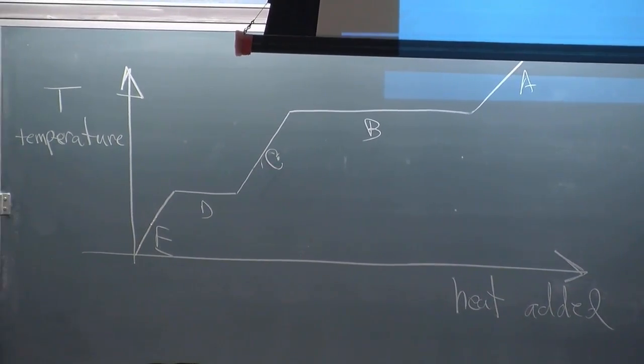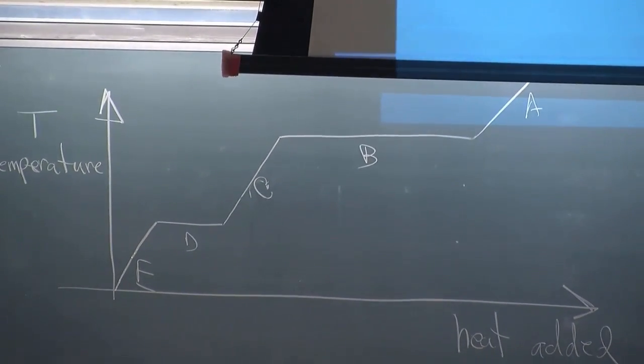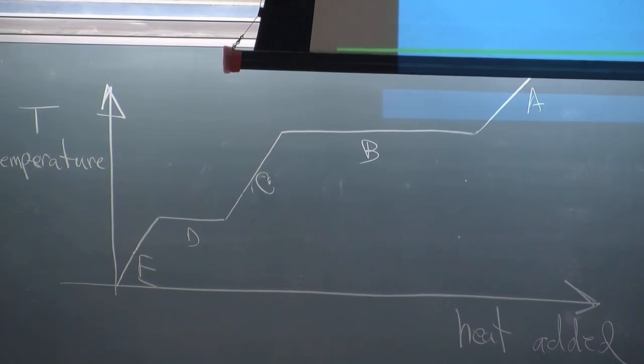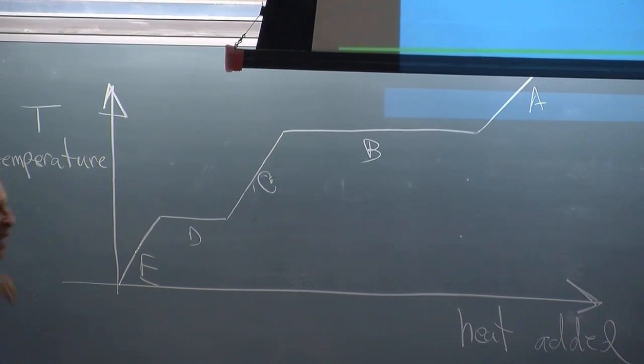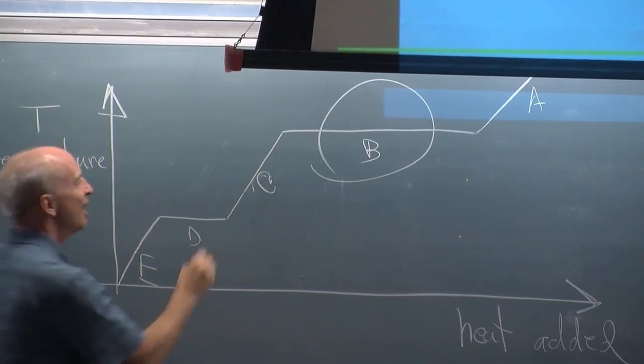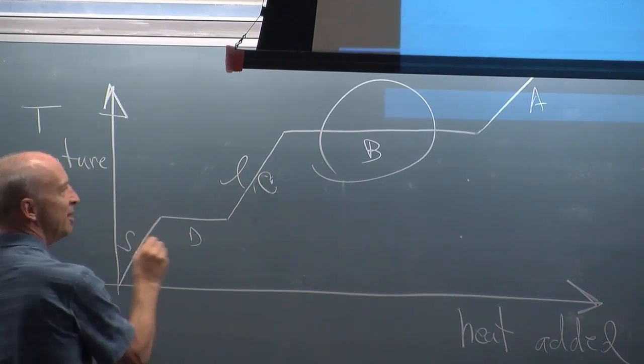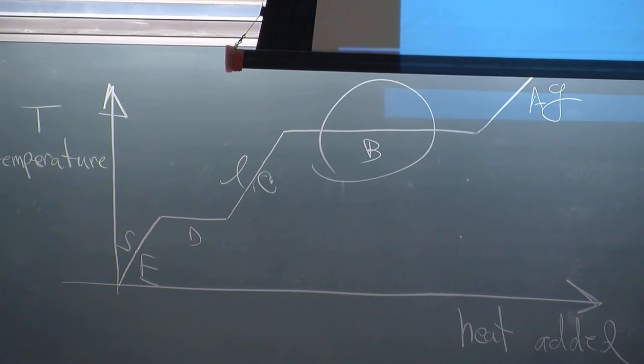How many say A? B? C? D? E? Okay, the main votes are for B. This is a liquid. That's a solid. That's a gas on a standard three phase diagram.